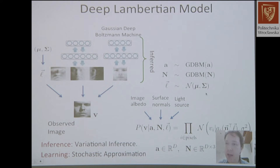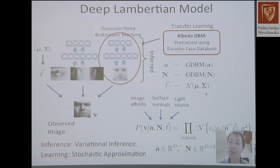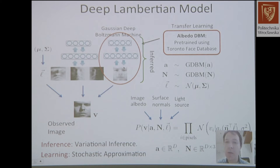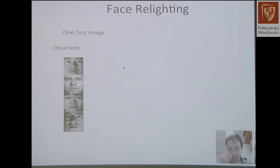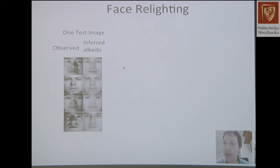Inference can be done via variational inference or stochastic approximation. We can pre-train this generative model on clean faces or illumination-independent representations. Applying this model — a very simple extension with structure — we have 38 subjects, 45 images of varying illumination per subject, split into training and test. Showing one test example at test time, this is the inferred albedo: the illumination-independent representation of the face.